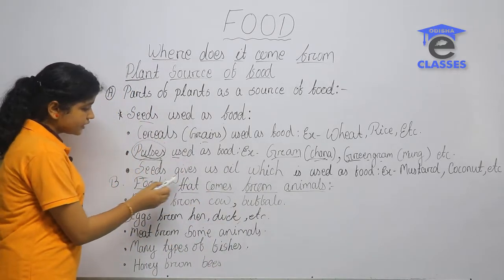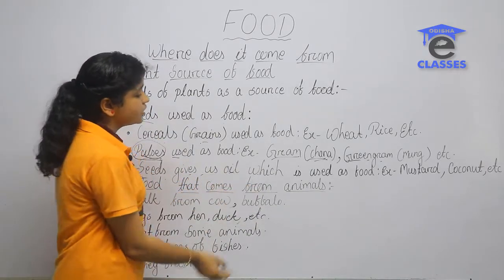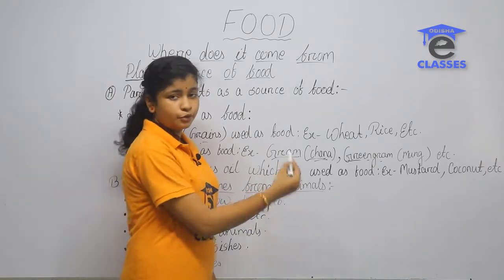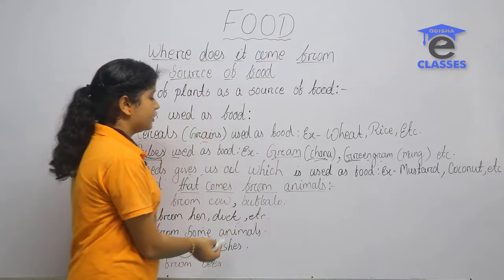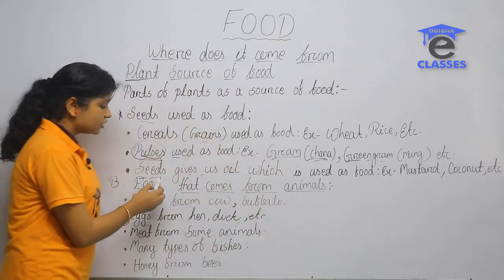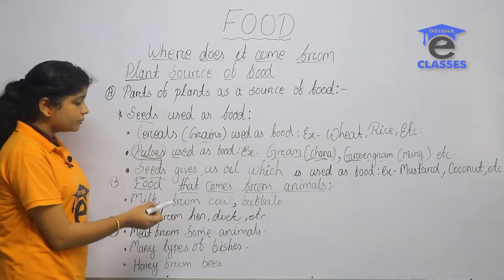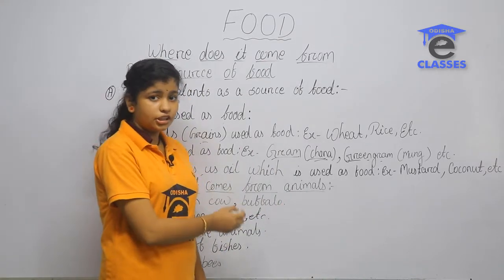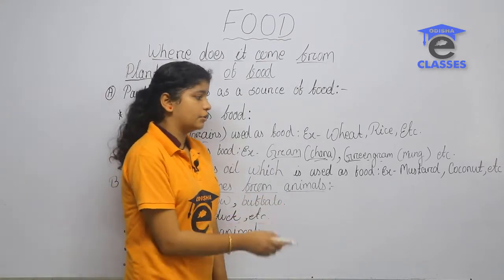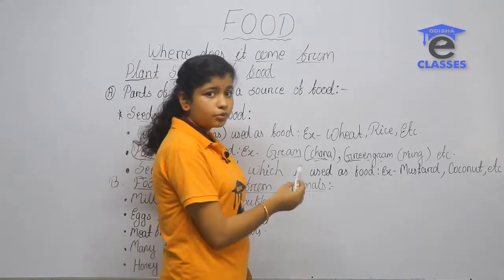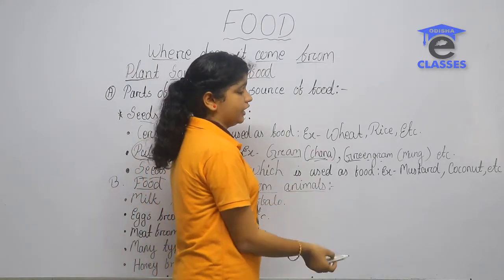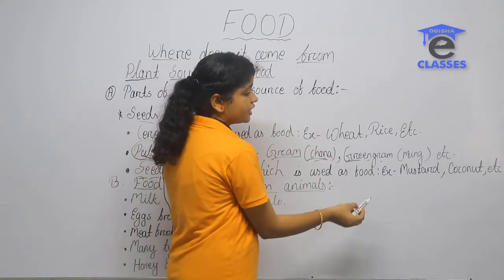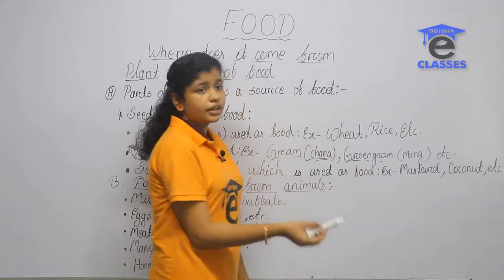Seeds give us oil, which is used as food. Seeds are used to extract oil. The oil has a lot of fat. Examples include mustard and coconut oil.